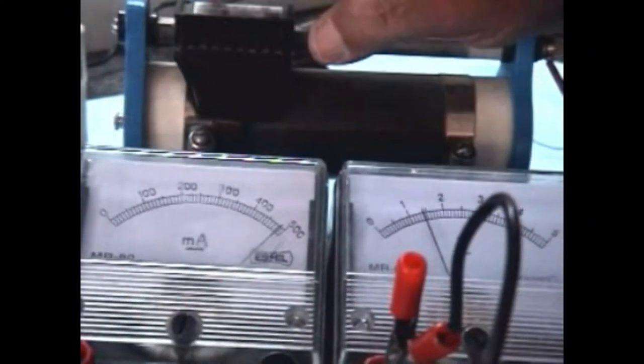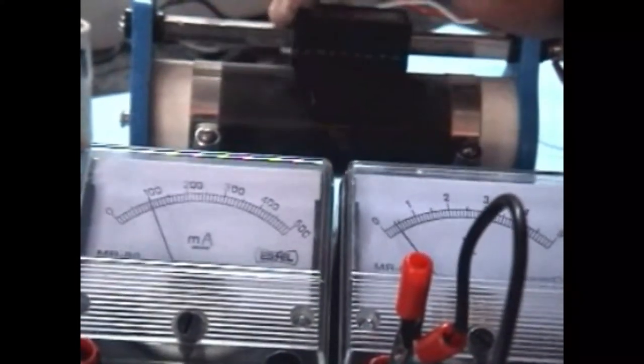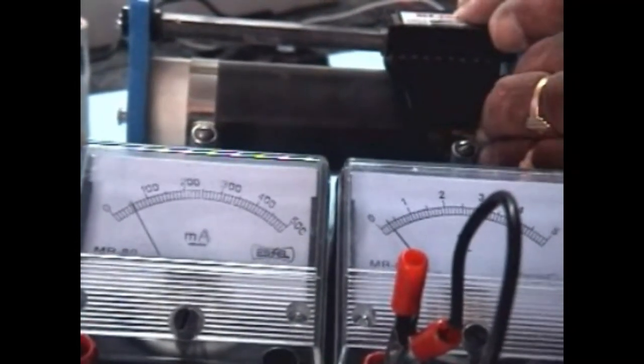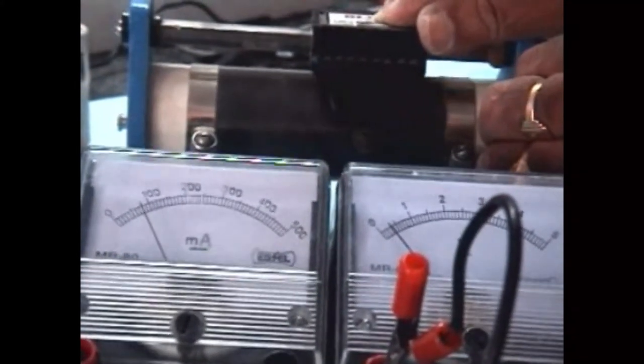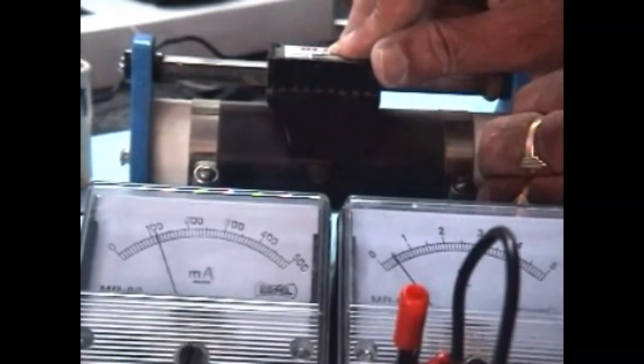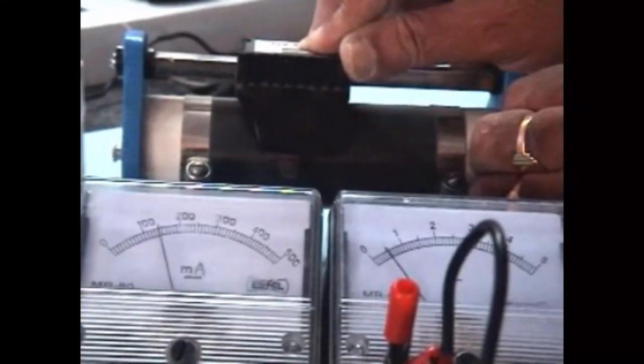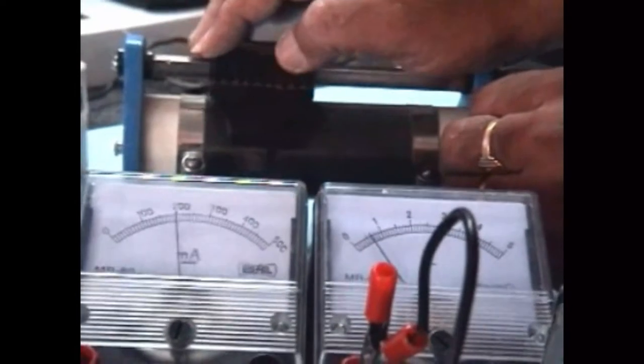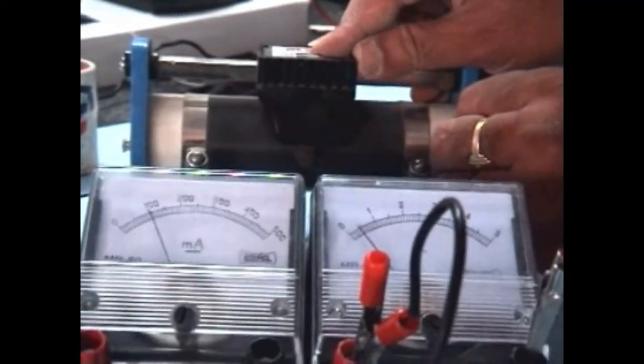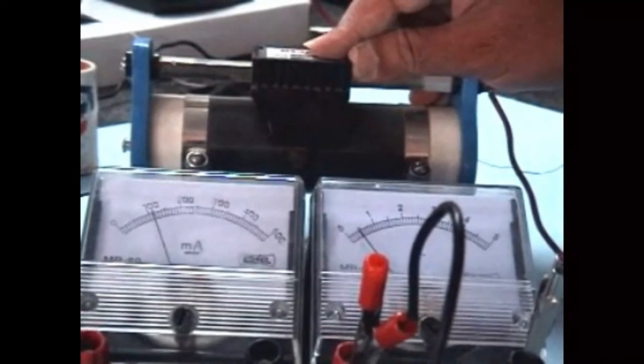So you can see, when I am moving the key on the rheostat, both the readings of voltmeter and milliammeter are continuously increasing. Now at any one particular point, if you take, for example here,